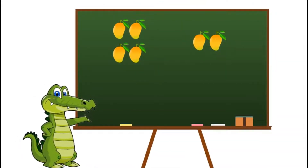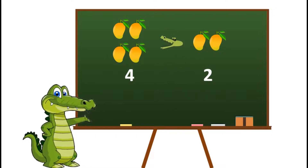Here we have one, two, three, four mangoes on one side and one, two mangoes on the other side. Now where will I open my mouth? Well done! We know that four mangoes are more than two mangoes, so I will open my mouth towards the bigger number four. Therefore, four is greater than two.